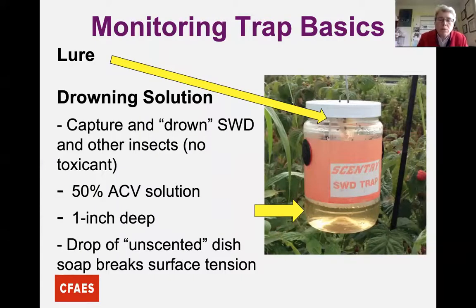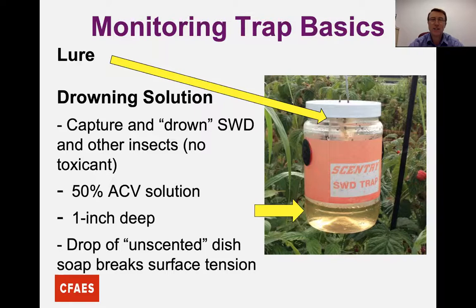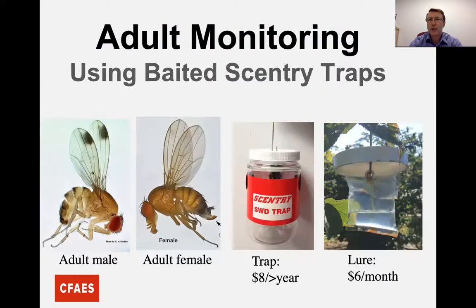The lure itself is not a toxicant — there's nothing harmful about it, you can touch it. If you happen to smell it, it's going to smell like salt and vinegar potato chips. It's not poisonous or toxic. The lure is attached to the lid which screws onto the jar. In this image you see the jar with the lure inside at the top, and the bottom arrow points to what we call the drowning solution.